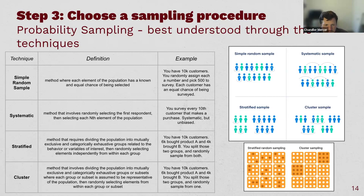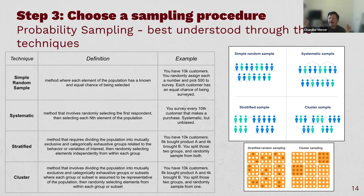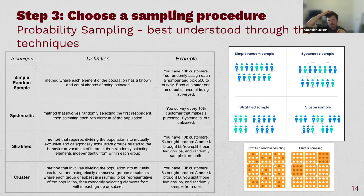Stratified sampling divides the population into mutually exclusive and categorically exhaustive groups related to similar behaviors or variables, then randomly selects elements independently from within each group. For example, if you have 10,000 customers and 6,000 bought Product A and 4,000 bought Product B, you split into those two groups and randomly choose from each. You're using judgment to identify the groups, but then randomly sampling from within them rather than from the whole pool.